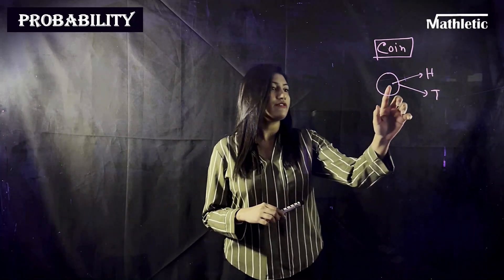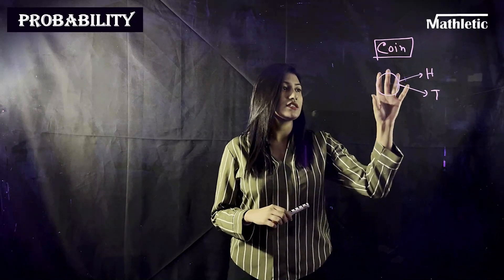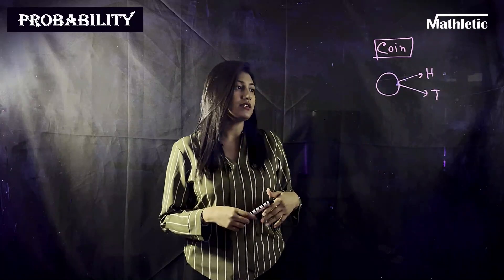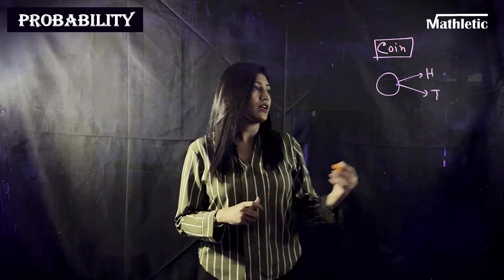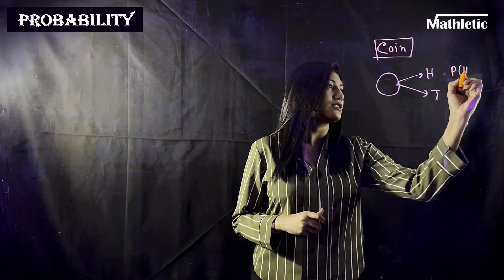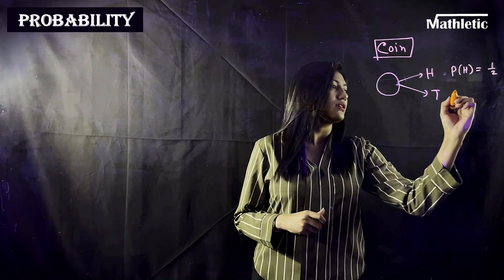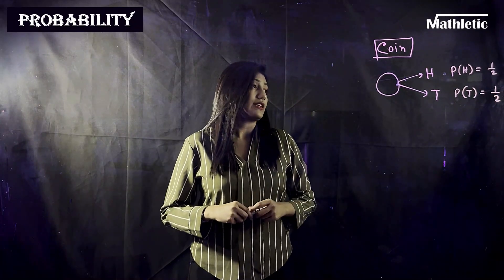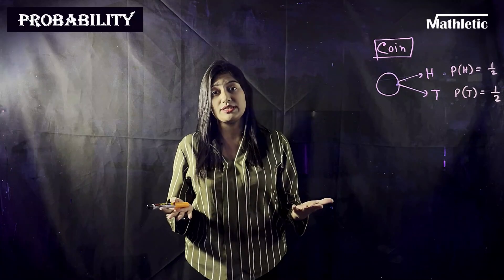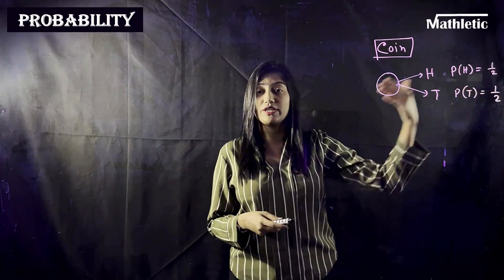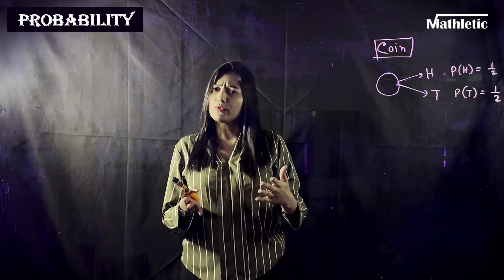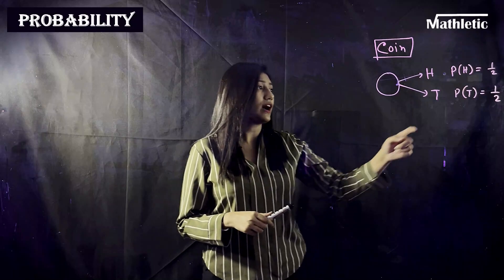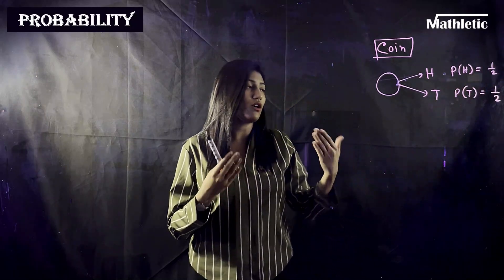In general, there is a 50% chance of getting a head and similarly a 50% chance of getting a tail — so probability of head is one-half, and probability of tail is also one-half. You can express probability as a percentage by multiplying by 100 to get 50%. We will be working with the fractional form only, which is one-half.